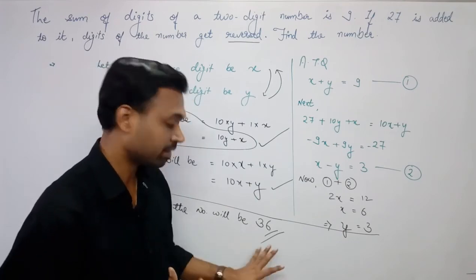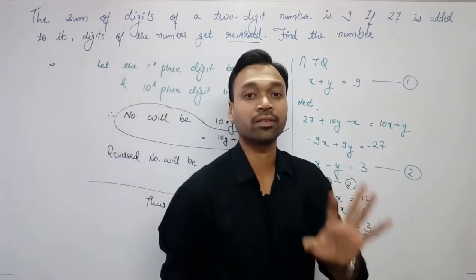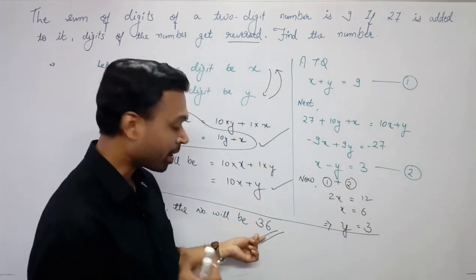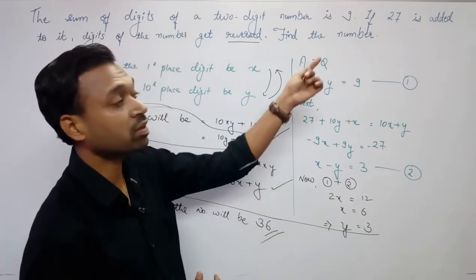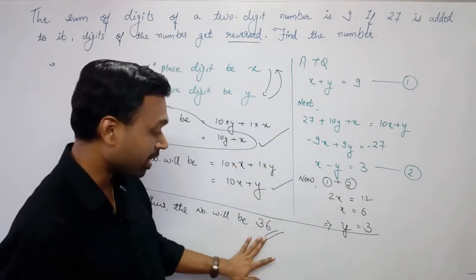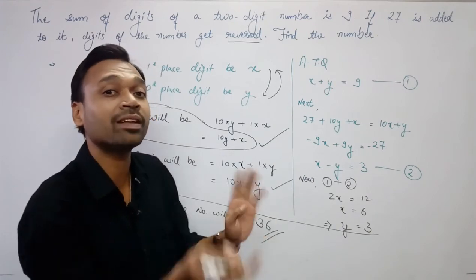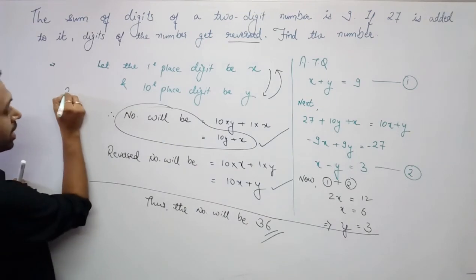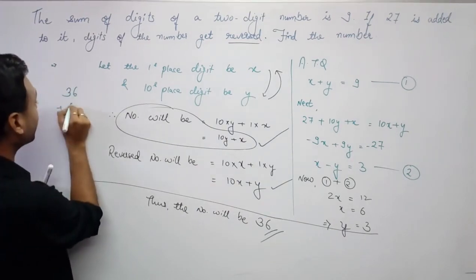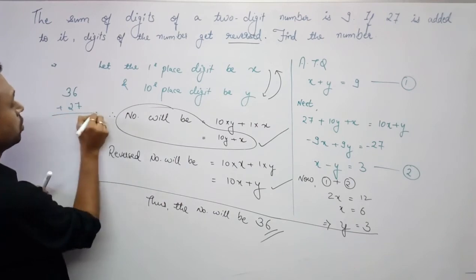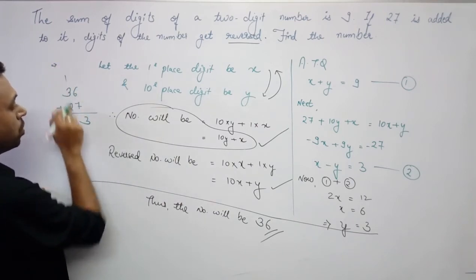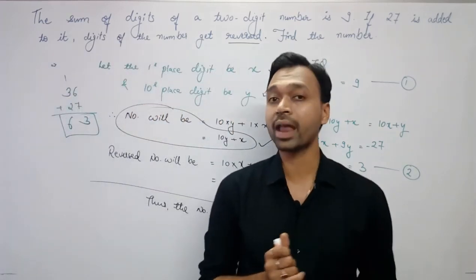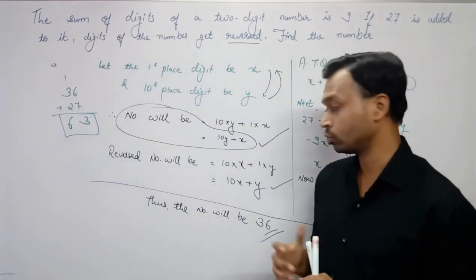This is our answer — the required number is 36. Let's do a quick cross-check: the question says that adding 27 to the number should give the reversed number. 36 + 27 = 63, which is indeed the reverse of 36. Verified! So our answer is confirmed.